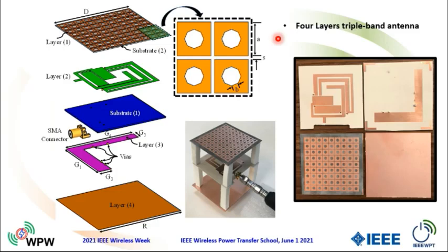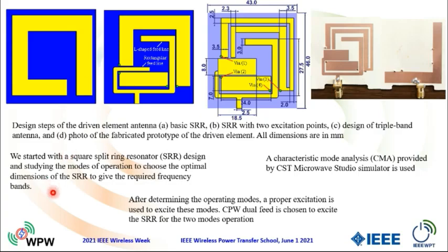In this design, we use a four-layer triple-band antenna. There is a driving element which is the top layer and the bottom layer. There is a reflecting plane and a director structure as shown. Here are the design steps for the antenna. We started with a square split-ring resonator, and by studying the modes to choose optimal dimensions of the split-ring resonator to match the required frequency bands. We used characteristic mode analysis provided by CST Microwave Simulator.